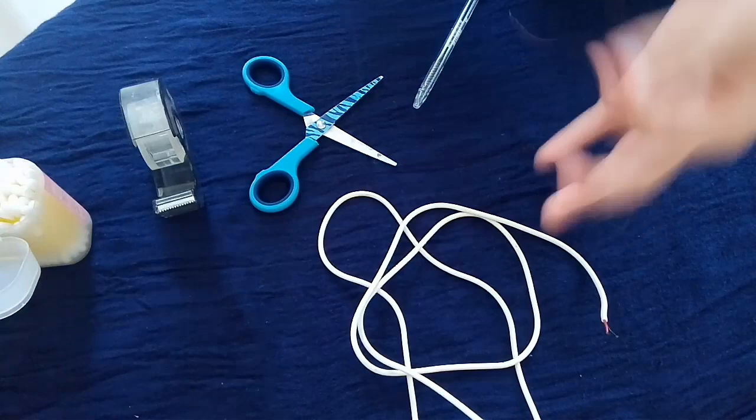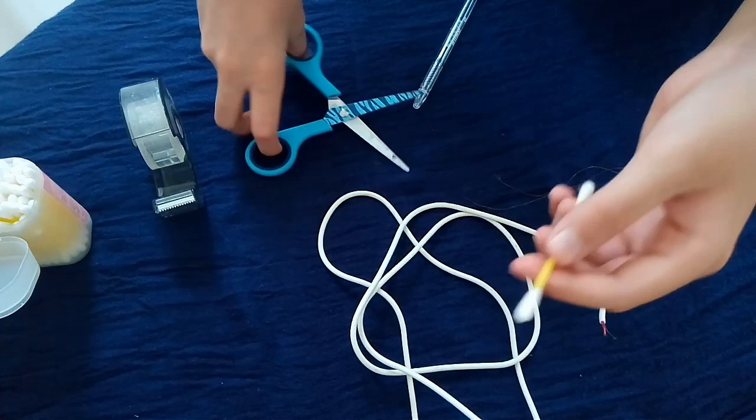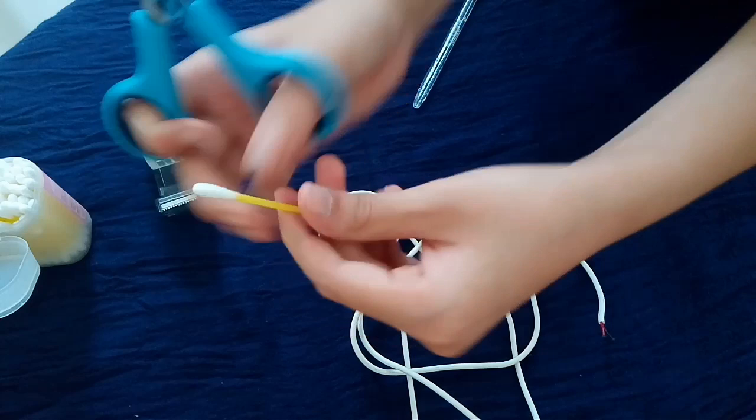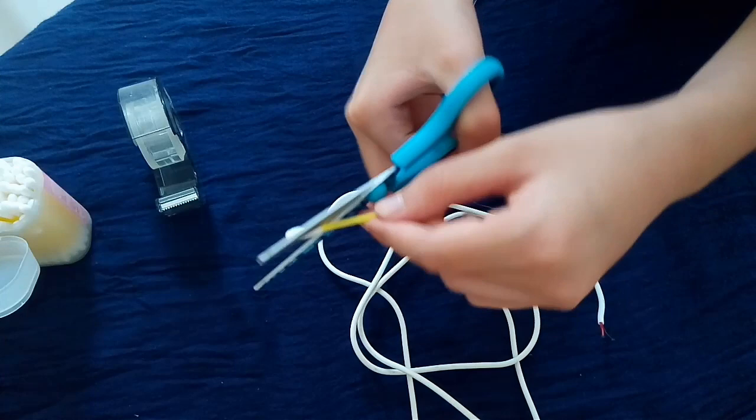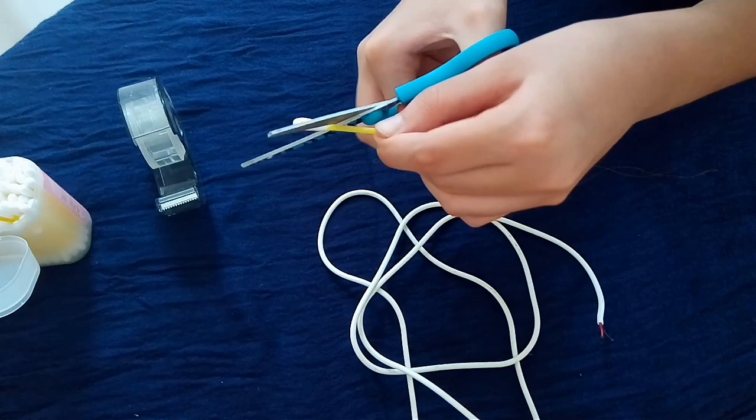After you have the copper wire out, take an earbud and cut it like this. We don't need a single bit of plastic. We only need the cotton bud. But it's okay if you have a little plastic. So, just cut it slanting like that.